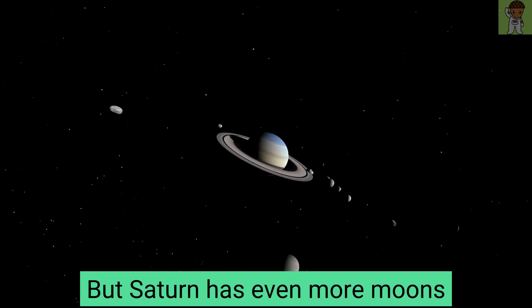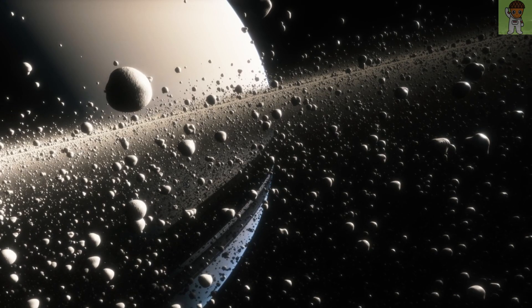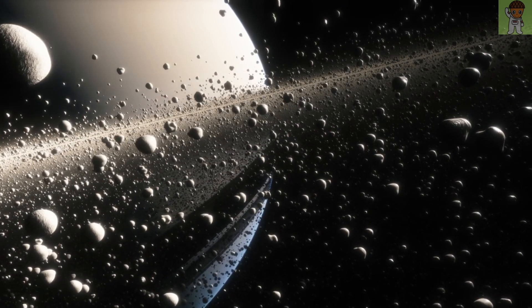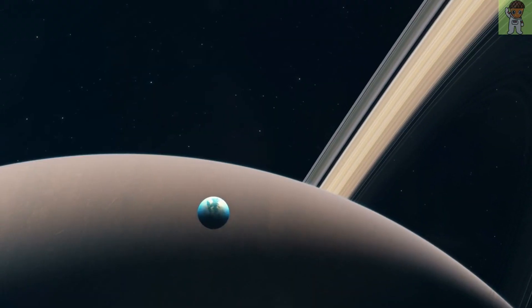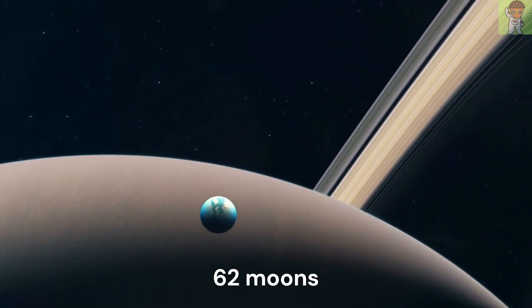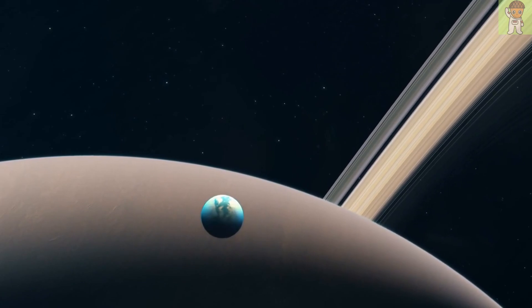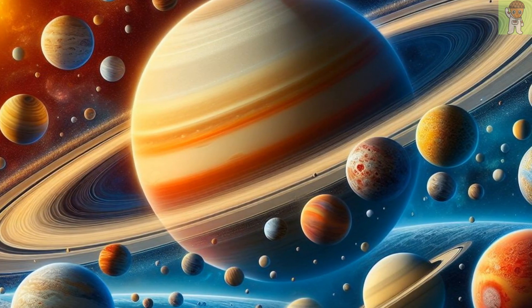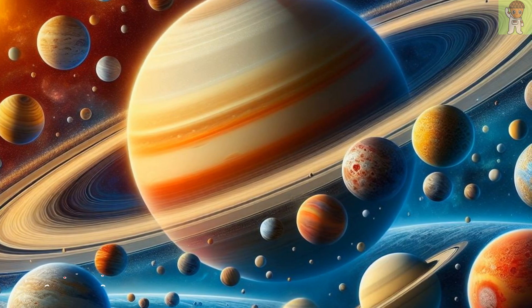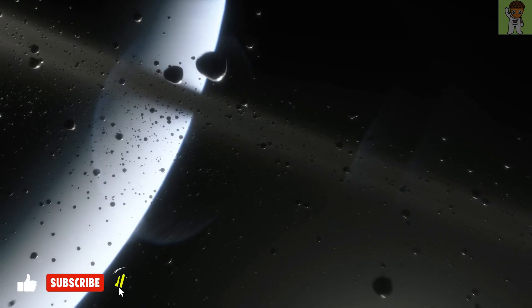But Saturn has even more moons. If you thought Jupiter gained lots of moons this year, just wait until you get a load of Saturn's new satellites. This year, scientists officially added 62 moons to the ringed planet's roster, bringing its total to 145 and setting a new record that is unlikely to be broken by Jupiter again. Some of the new moons were just 1.6 miles wide.